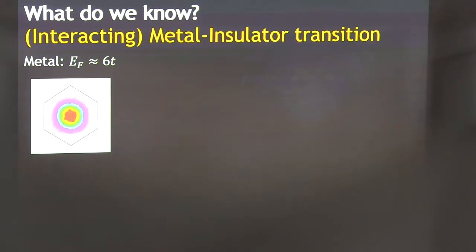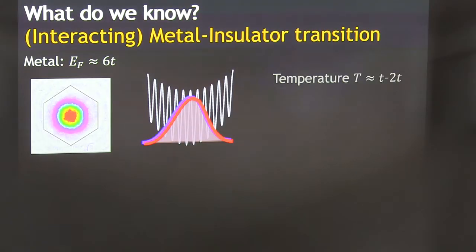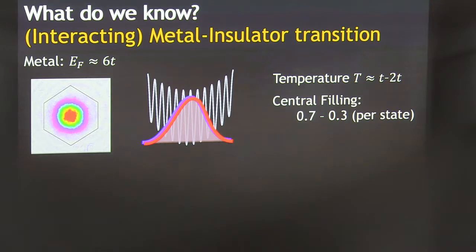In those measurements what we did is we tuned the gas to make putatively a metal where we set the Fermi energy at half the bandwidth. Here's a picture of the Fermi distribution — you can see the Fermi energy of a cold gas is well within the Brillouin zone. We vary temperature in this measurement, and also the central filling. We should think of this as a hot pyramid.